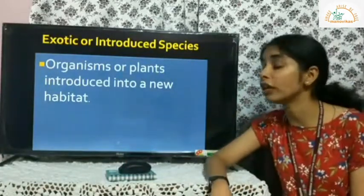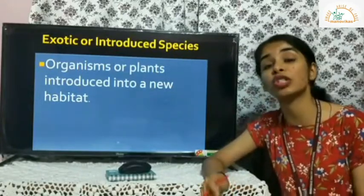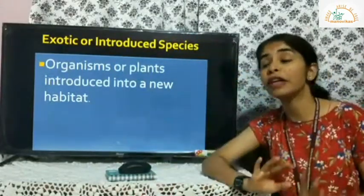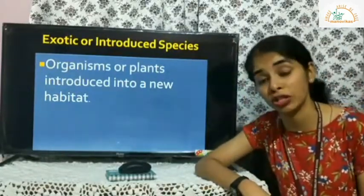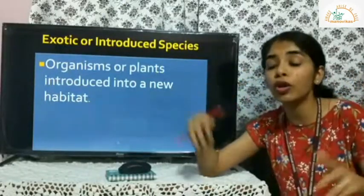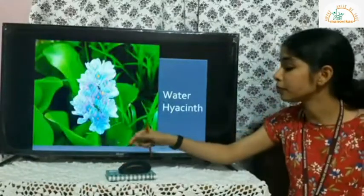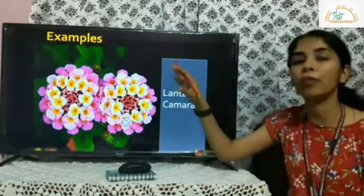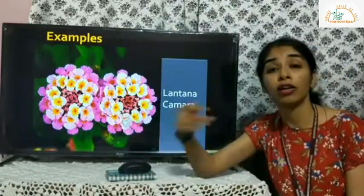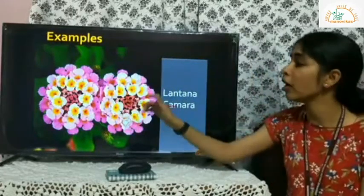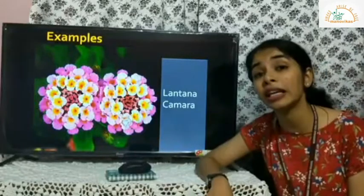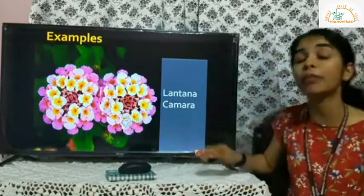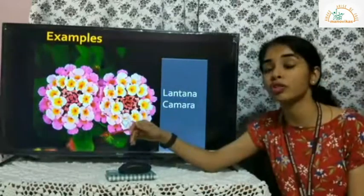Exotic or introduced species are species which are introduced by humans into a new place for our benefit. For example, Lantana camara is a plant that grows wild as roadside bushes — it's ornamental but releases harmful toxins and hampers the growth of other plants around it. Water hyacinth is another example — once introduced in a region, it spreads very rapidly and uses up all the oxygen in the water, causing deficiency for other aquatic organisms.